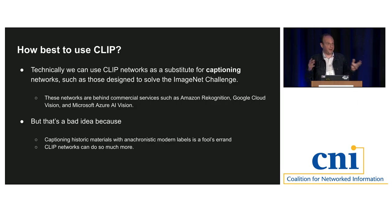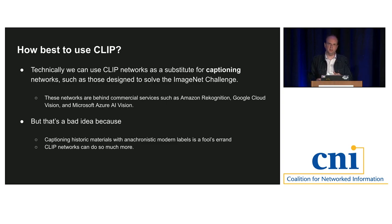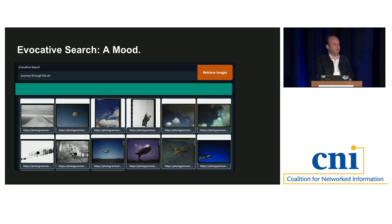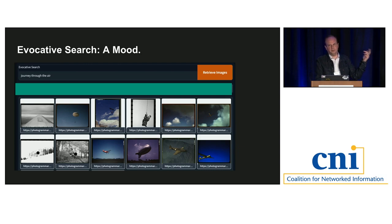You could use CLIP to find cats, but I don't think that's the most interesting use. What CLIP really enables is evocative search. Here's a screenshot from the FSA/OWI pictures — the 1930s New Deal photographs. I mapped them all into CLIP and asked for 'images of a journey through the air.' The first image is the wing of an airplane, then a paratrooper, a guy on a crane, a Zeppelin, a kid on a swing. These are all journeys through the air — far more sophisticated than searching for 'airplane' or 'parachute.'